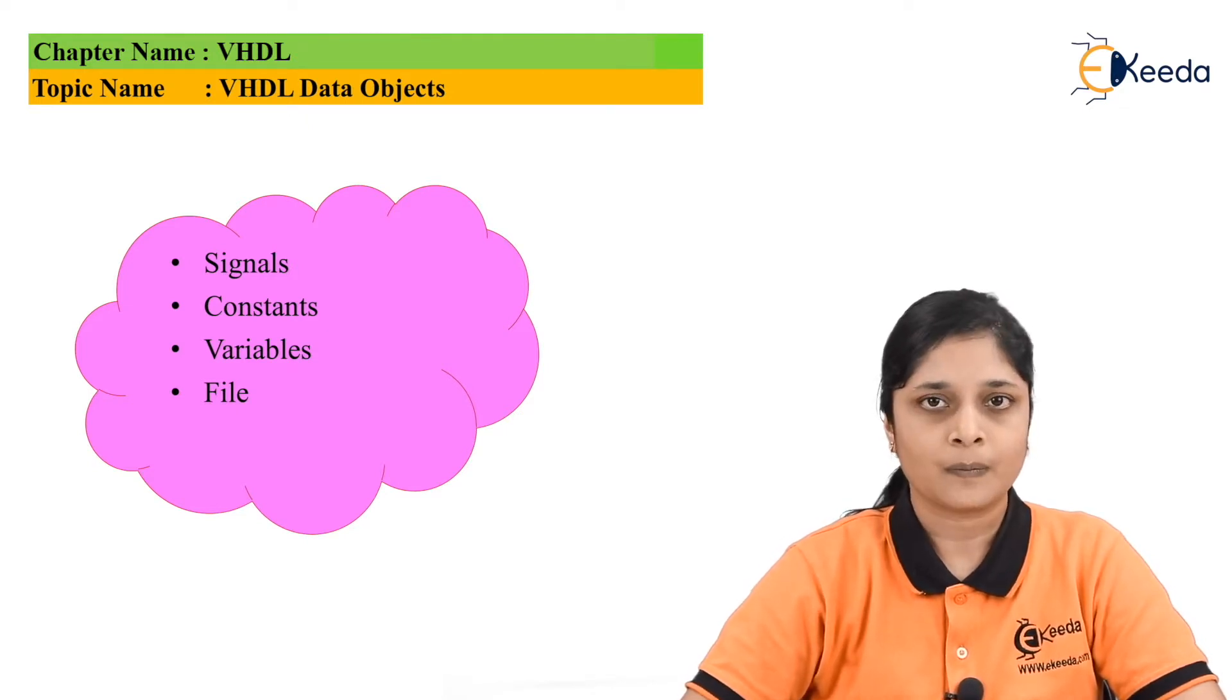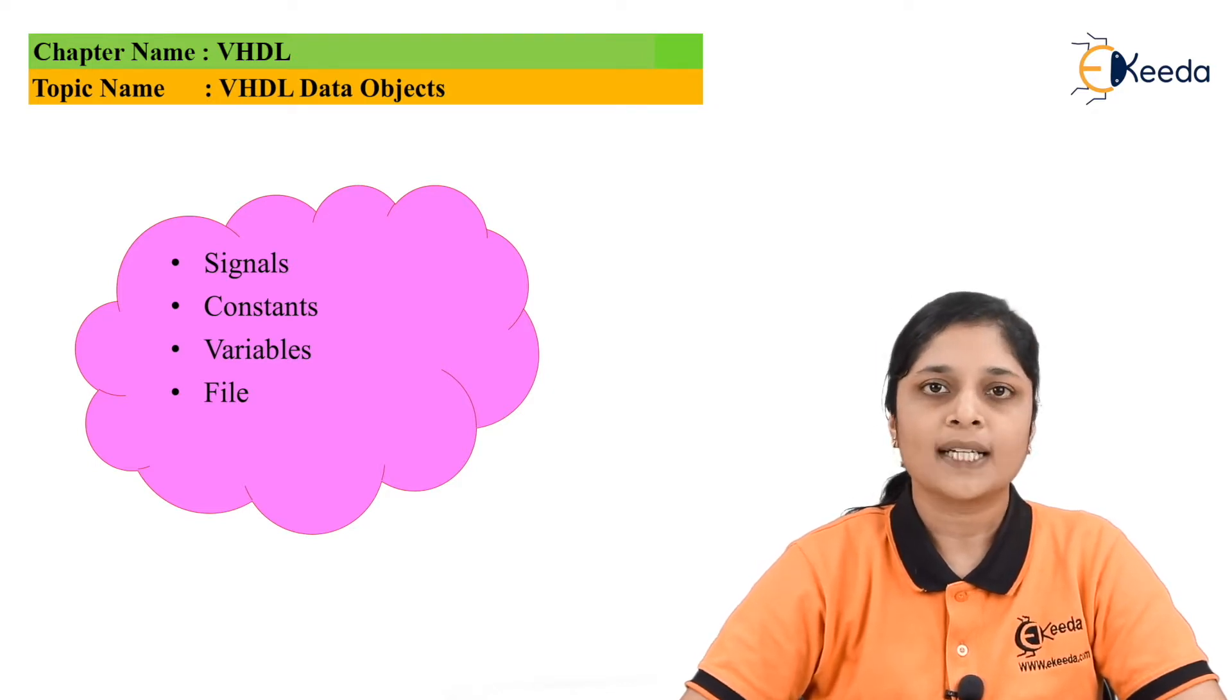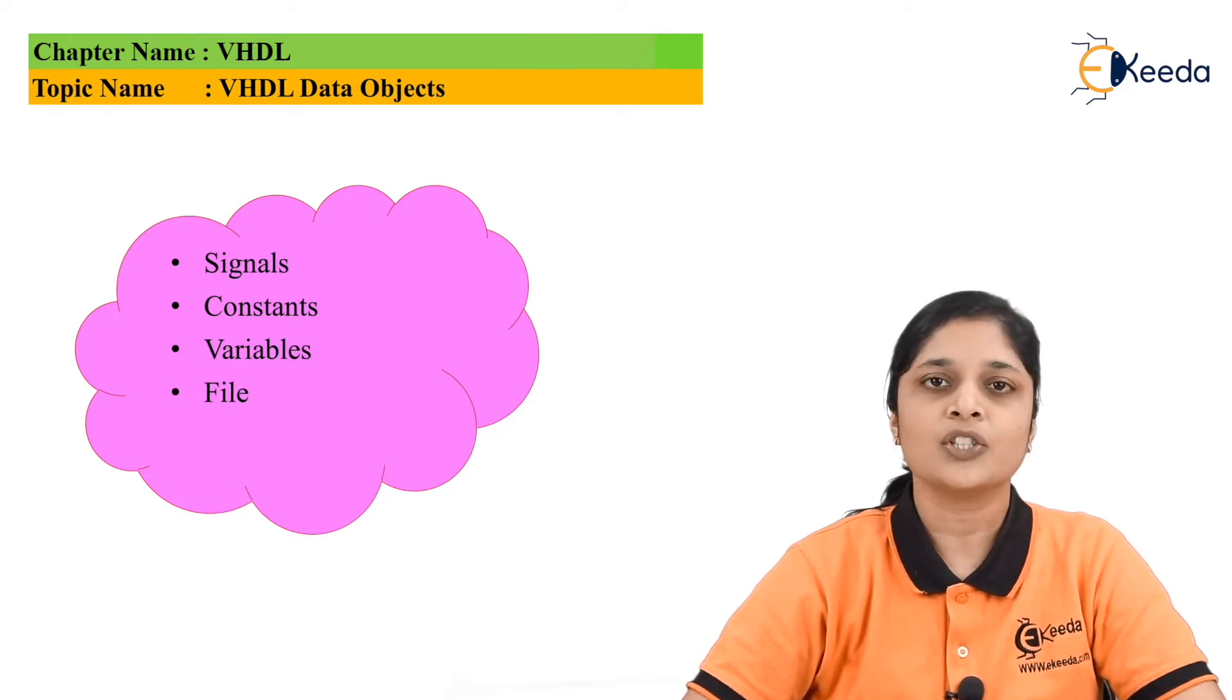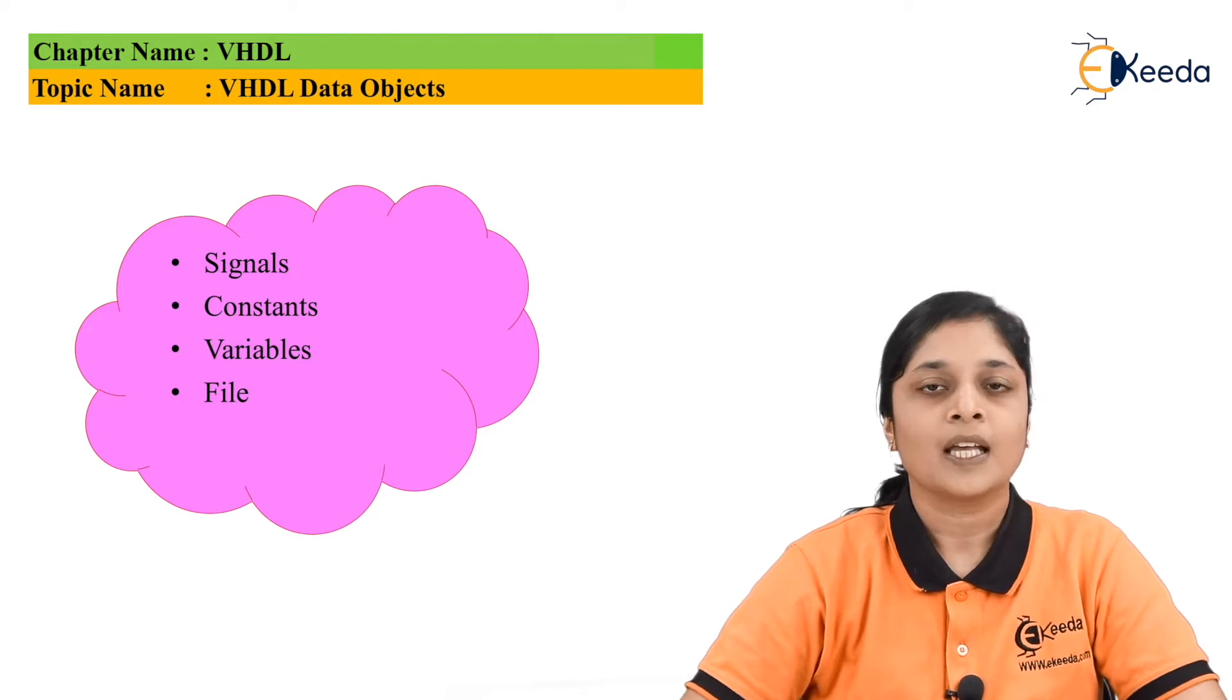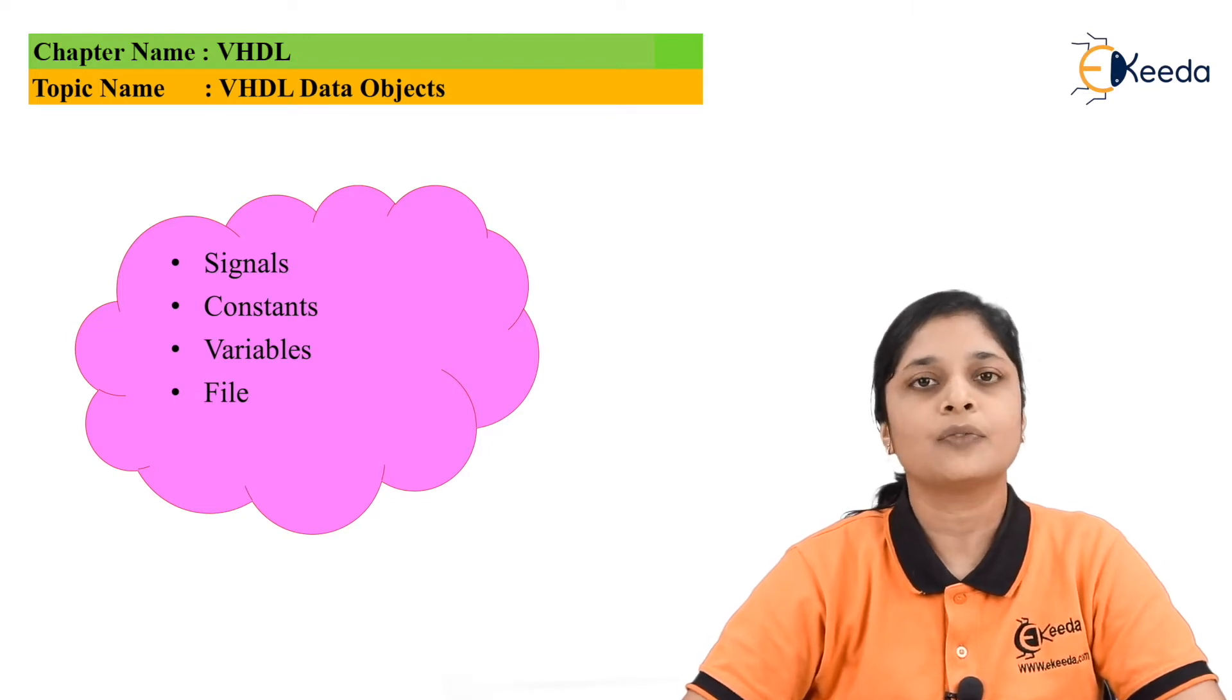The next data object VHDL provides is a variable to hold any value while simulation of a program. You can define the variables inside the program to get the final results directly. It will not change its value. It is just used to hold the value of a number. Inside the variable you can store the value; it will hold this value for the compilation purposes.